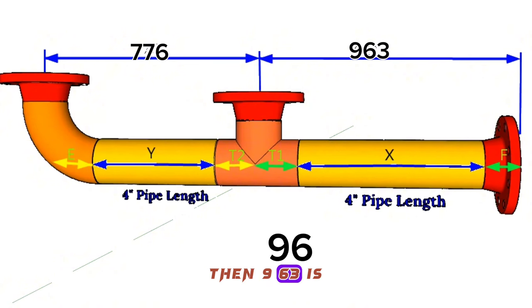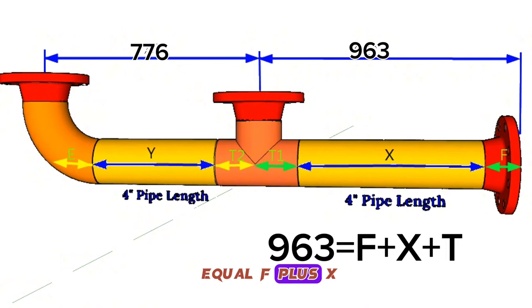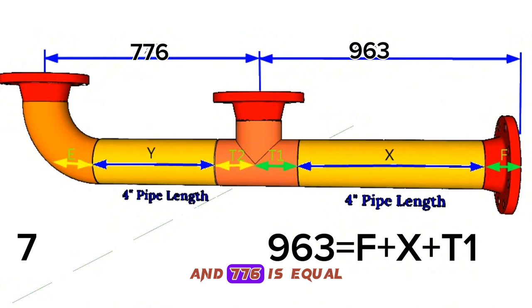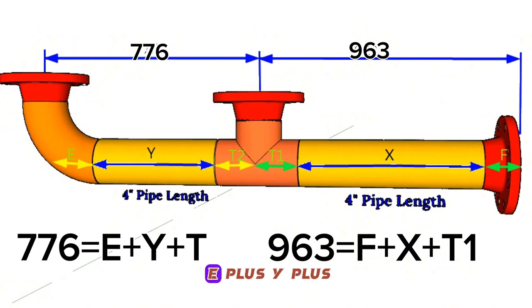Then: 963 equals F plus X plus T1, and 776 equals E plus Y plus T2.